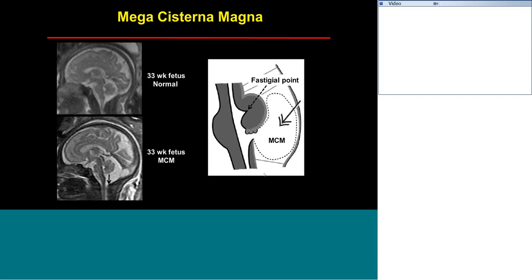Here is a normal 33-week fetus. There's some controversy about the exact formation of the mega cisterna magna, but of note, it has a normal vermis and normal-sized fourth ventricle.